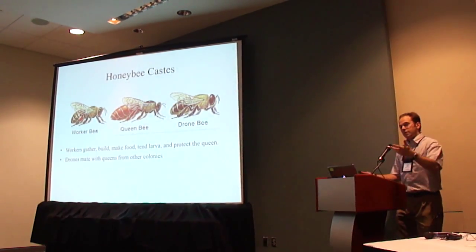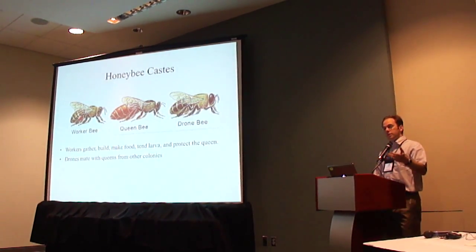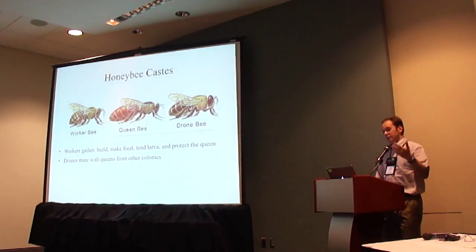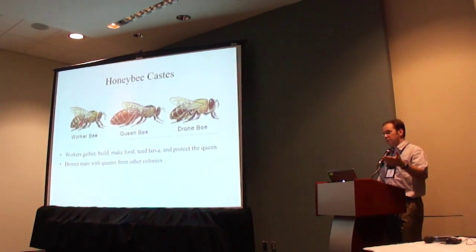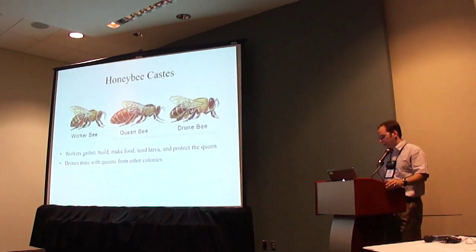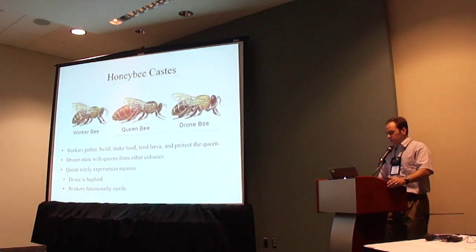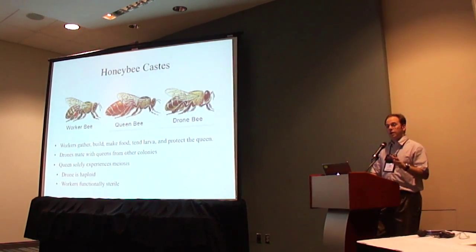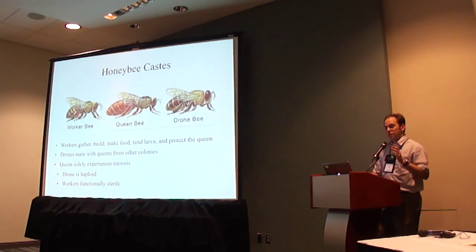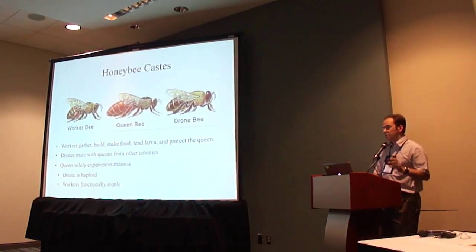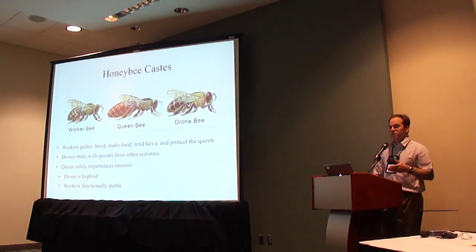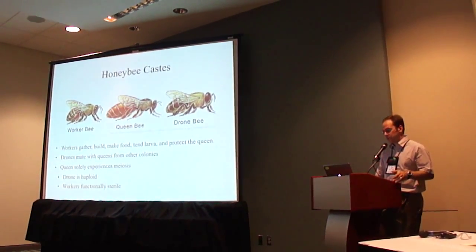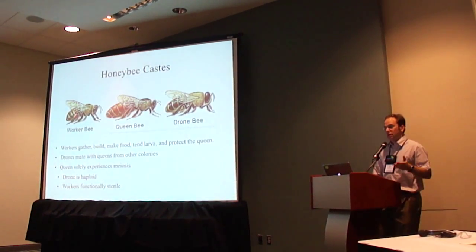The drones mate with queens from other hives and don't do much else — they are solely a reproductive caste. The queens are the primary egg-layers and they are the only caste in the honeybee that experiences meiosis. The drone is haploid, so it doesn't produce sex cells by meiosis, and the workers are functionally sterile.